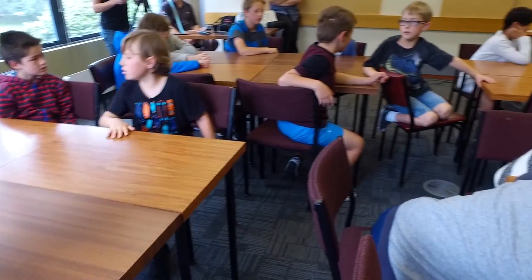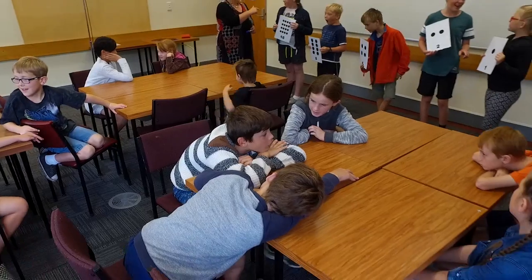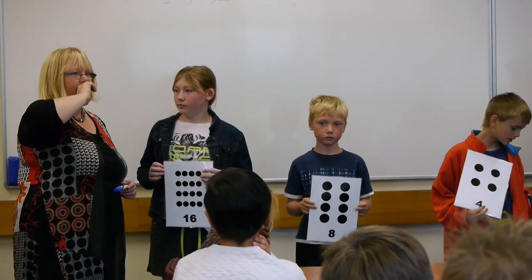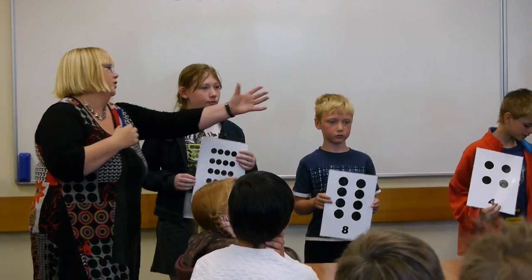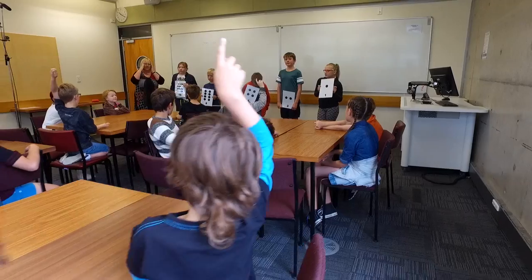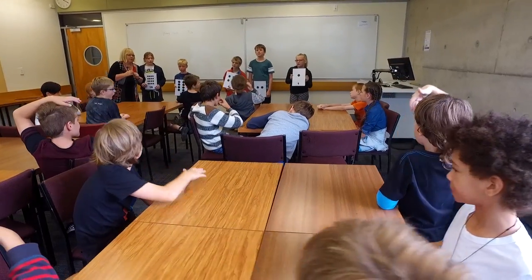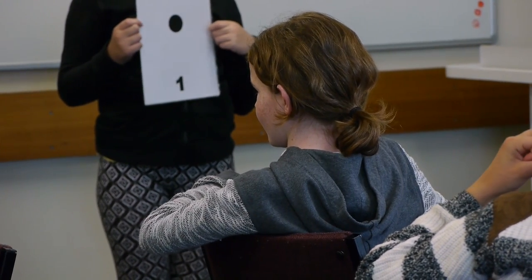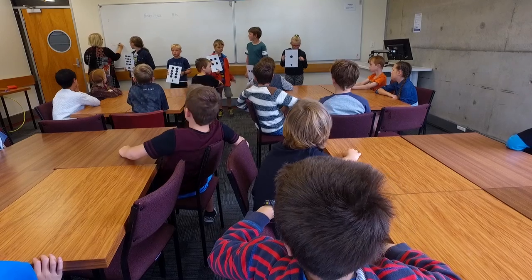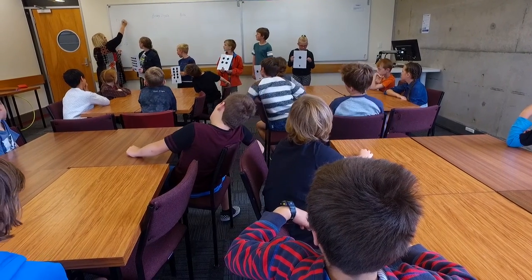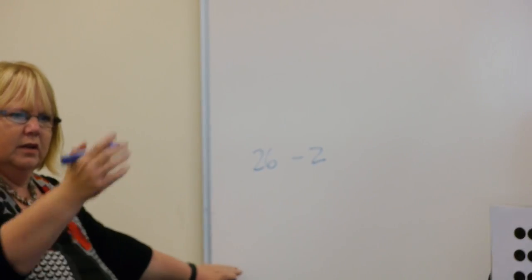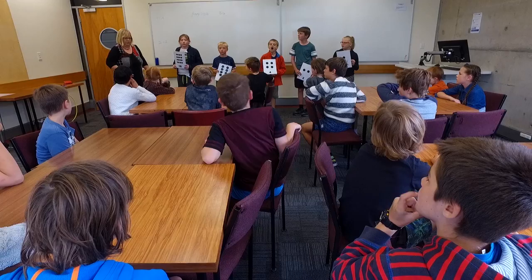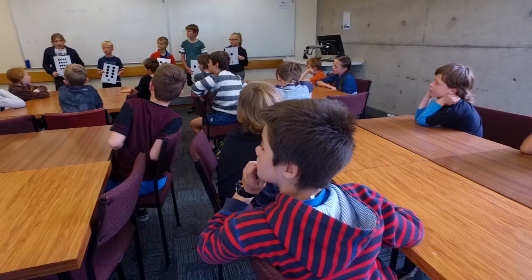How would we represent letters? A could be 1 and B could be 2? We have the number 26, so 26 could be Z and A could be 1. What would B be? 2. C? 3. D? 4. E? 5. I think we've got the hang of it.